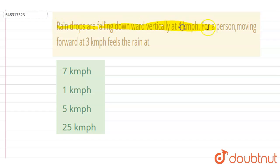Vertically at 4 kilometers per hour. For a person moving forward at 3 kilometers per hour, feels the rain at... So if you see here, raindrops are falling downward, and let's say the person is moving like this with a speed of 3 kilometers per hour.